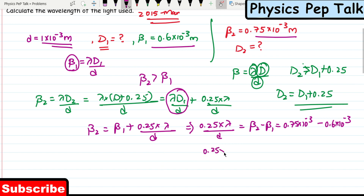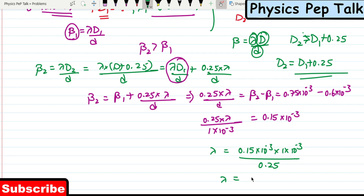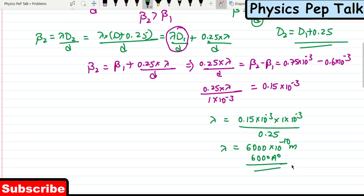So 0.25 × lambda divided by small d (which is 1×10⁻³) equals 0.15×10⁻³. Cross-multiplying: lambda = 0.15×10⁻³ × 1×10⁻³ / 0.25. On substituting all these values, the value of lambda is found to be 6000×10⁻¹⁰ meters, which is 6000 Angstroms. This is the wavelength of the light used and this is the required solution.